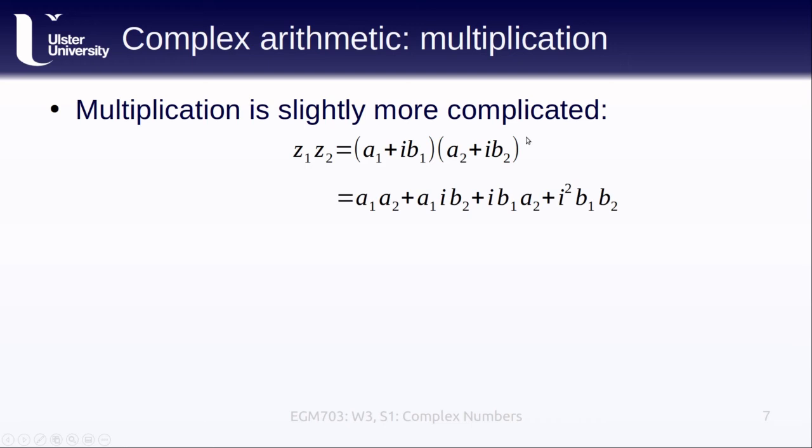Now remember that i² is just -1. So then we can reorganize this and write it out as follows. The real part of z₁·z₂ is just a₁·a₂ - b₁·b₂ + i(a₁·b₂ + a₂·b₁).